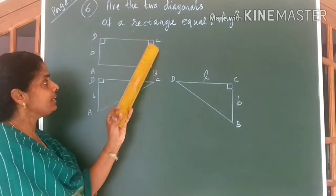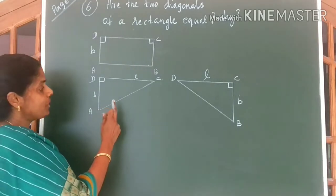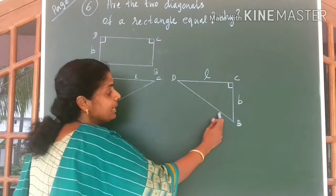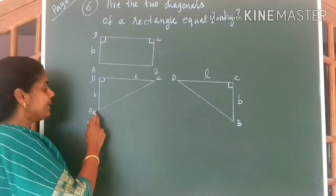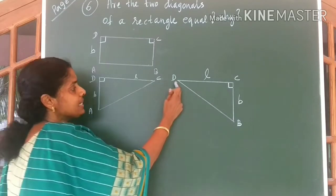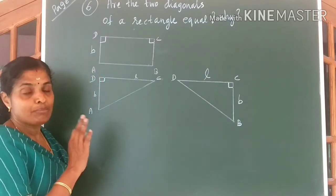I have drawn a rectangle ABCD. Then I have drawn two more triangles. Okay, to prove the two diagonals AC and BD are equal. Come to the question.